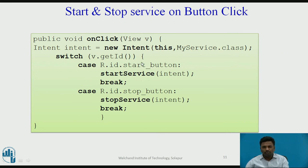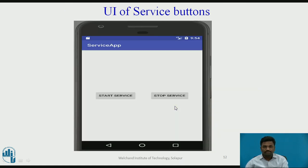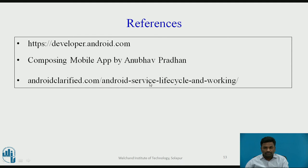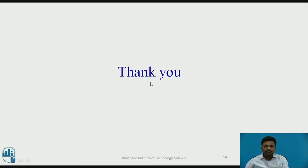To start and stop a service, you can have two buttons. On one button, start the service using startService() with an Intent — we have seen intents in a previous video for communication and data transfer. On the other button, stop the service using stopService(), which will call the destroy method. This is how the GUI will look with a start service and stop service button. These are some references which you can go through for more details. Thank you.